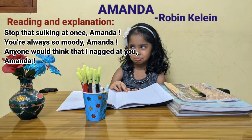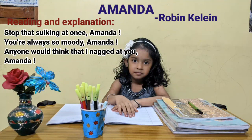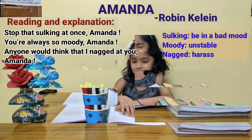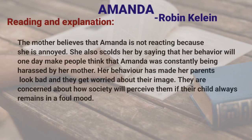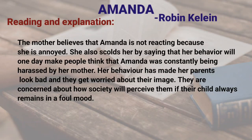The final stanza reads: 'Stop that sulking at once, Amanda. You are always so moody, Amanda. Anyone would think that I nagged at you, Amanda.' Sulking means being in a bad mood. The parents keep instructing Amanda on the do's and don'ts, but Amanda remains lost in her own dreams. Her mother now warns her for behaving in a very odd manner and asks her to stop being in a bad mood. She blames her of having an unstable mood, and scolds her saying that her behavior will one day make people think that Amanda was constantly being harassed by her mother.